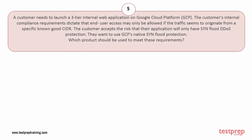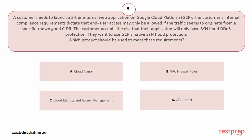Question number five: a customer needs to launch a three-tier internal web application on Google Cloud Platform. The customer's internal compliance requirements dictate that end-user access may only be allowed if the traffic seems to originate from a specific known good CIDR. The customer accepts the risk that their application will only have SYN flood DDoS protection and wants to use GCP's native SYN flood protection. Which product should be used? Options: A) Cloud Armor, B) VPC firewall rules, C) Cloud Identity and Access Management, D) Cloud CDN.